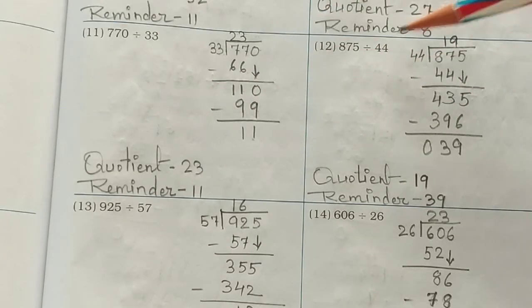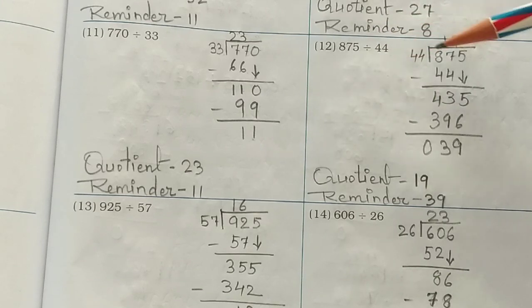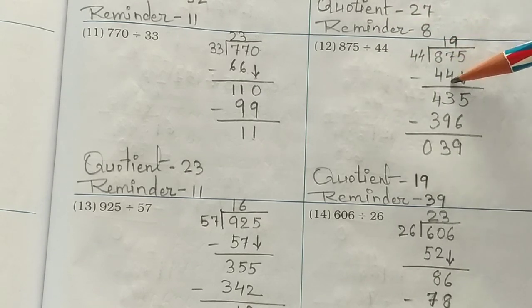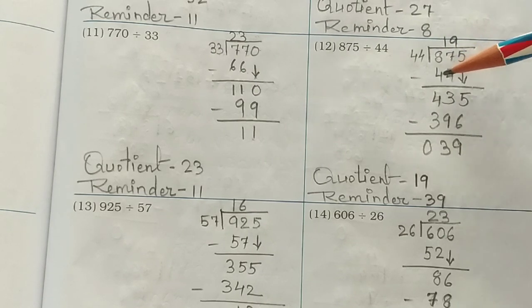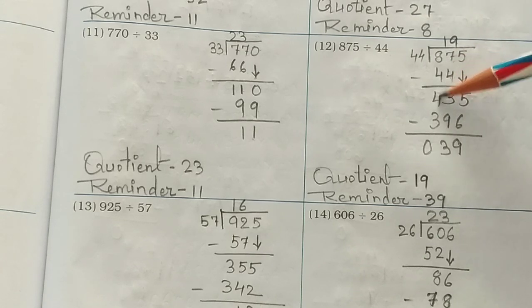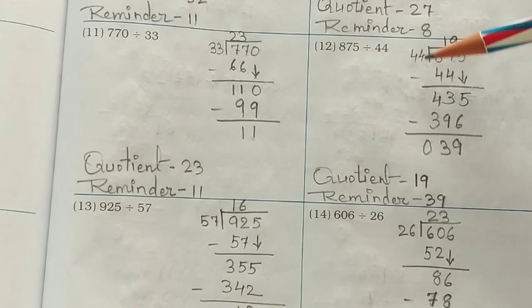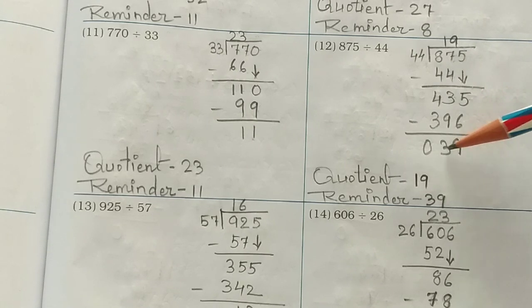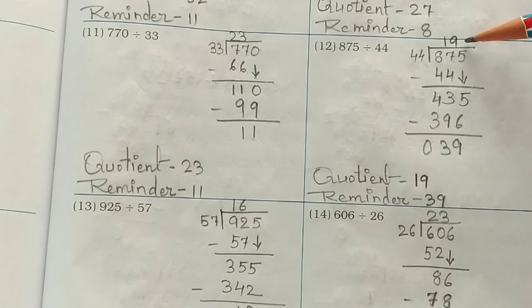Question 12: 875 divided by 44. We take 44 ones because 44 twos would be more than 87. Subtract 44 from 87 and you get 43. Bring down the 5 to get 435. 44 nines are 396 — subtract and you get 39 remainder. Your answer is 19 with remainder 39.